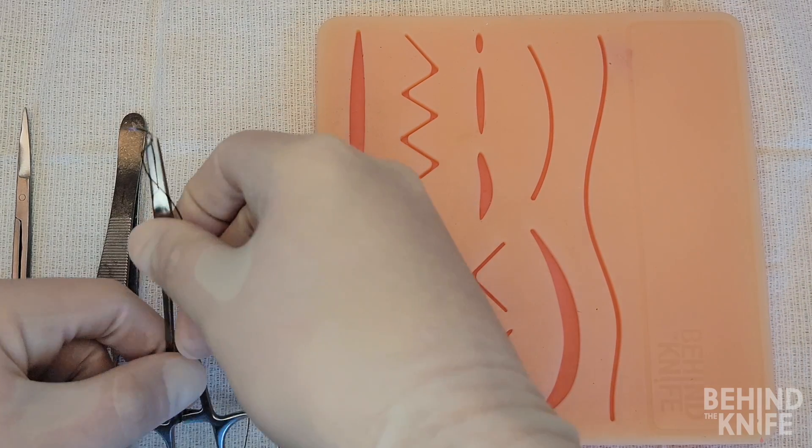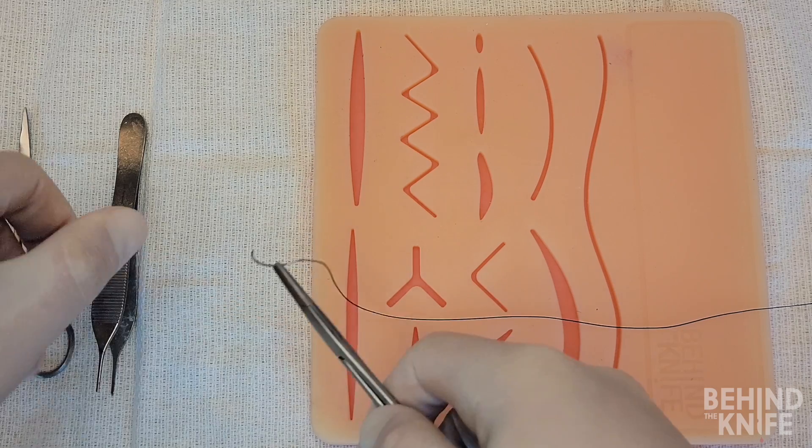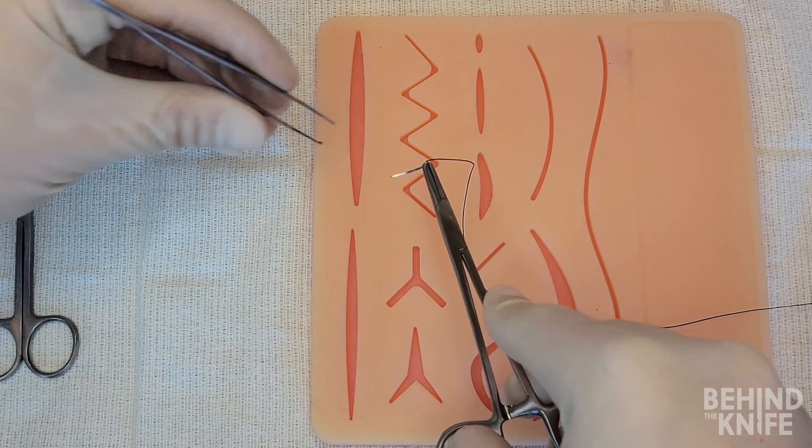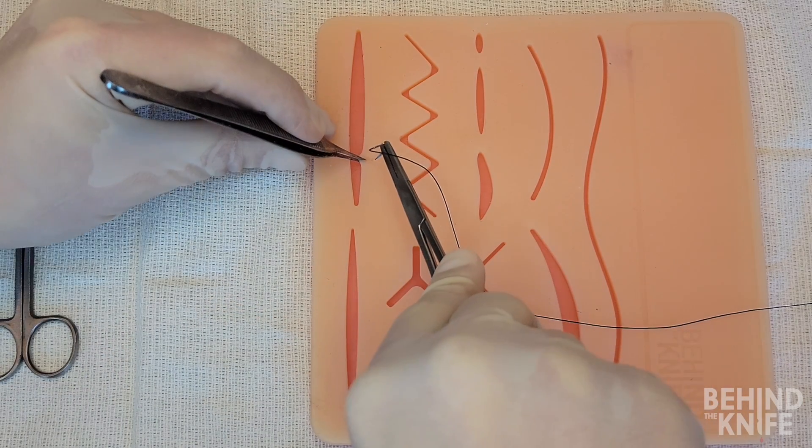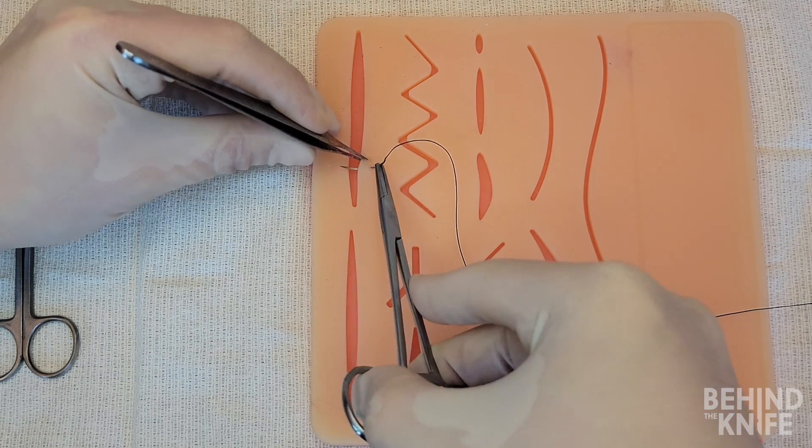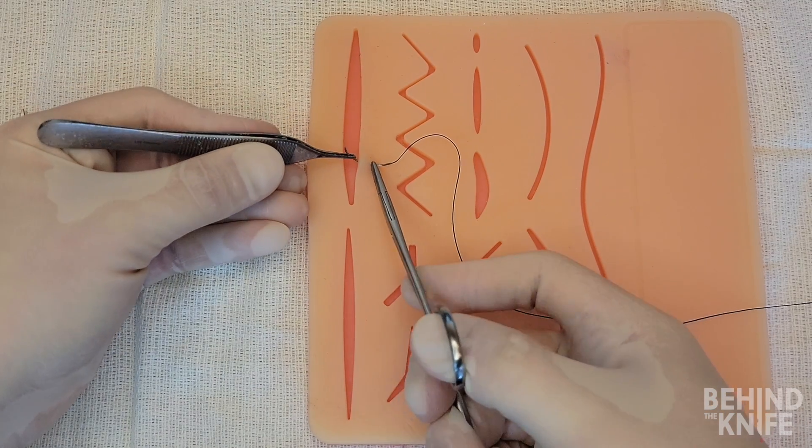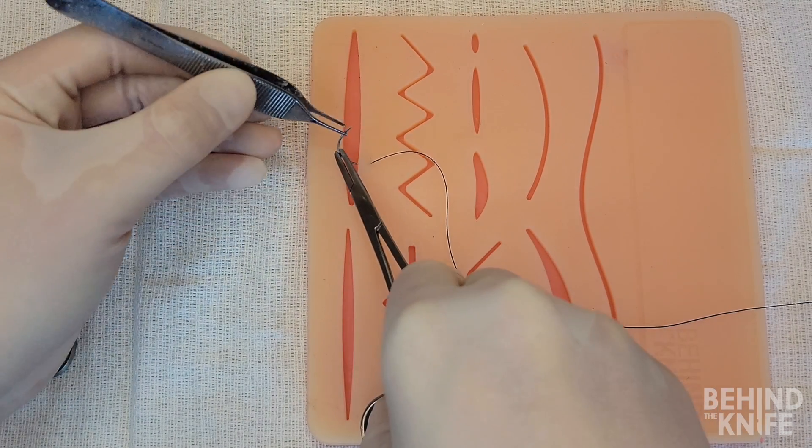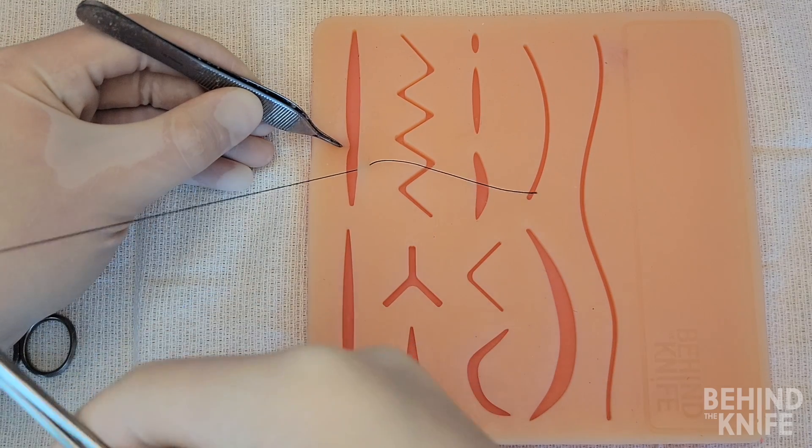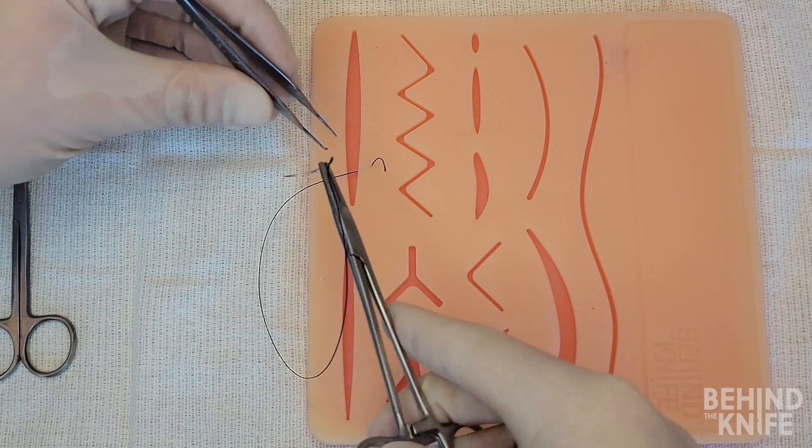We're going to start by picking up our needle drivers and loading our needle into them in the orientation for a forehand throw. The first part of the suture is performed similar to a simple interrupted suture. Depending on how far the wound edges are from each other, this throw may need to be done in two bites, such as seen here.